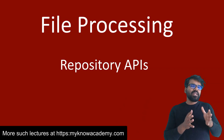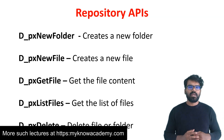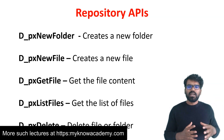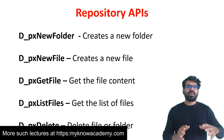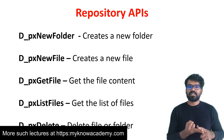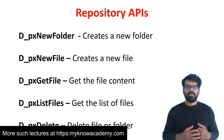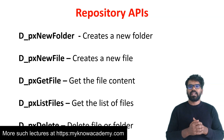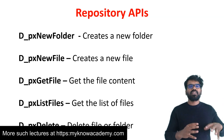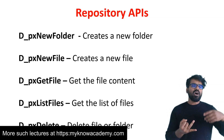With these APIs, what we can do is connect to the repository and perform different operations. There are five top actions or APIs you can use. First, you can create a new folder — we already saw this in the previous videos where the file listener creates the completed folder using this repository API. So px_new_folder can create a new folder. px_new_file will create a new file into a specific repository with a specific file name and specific content. You can provide the source using some kind of HTML stream.